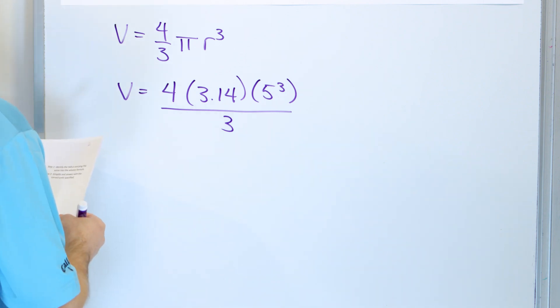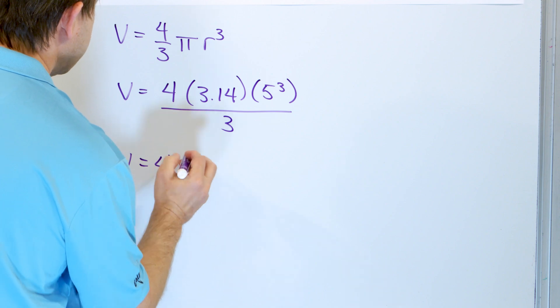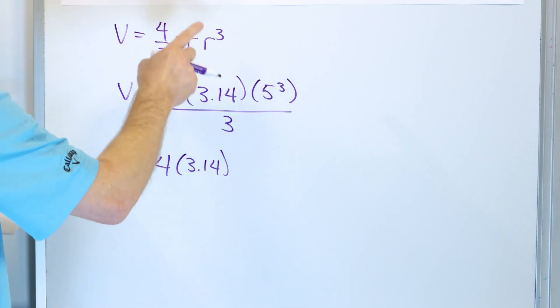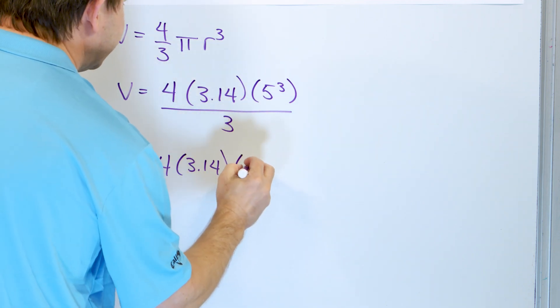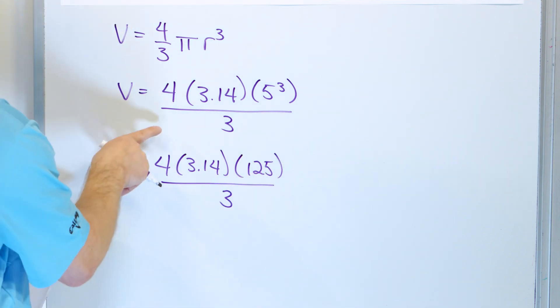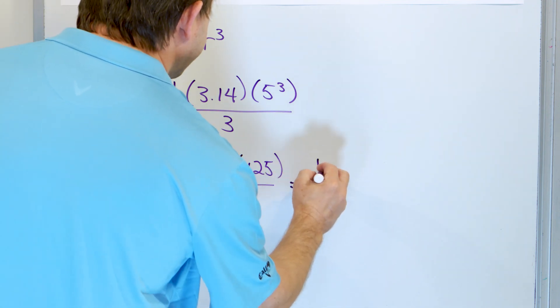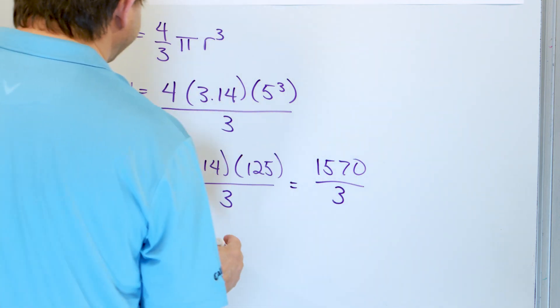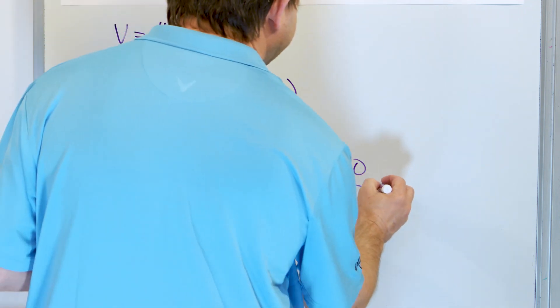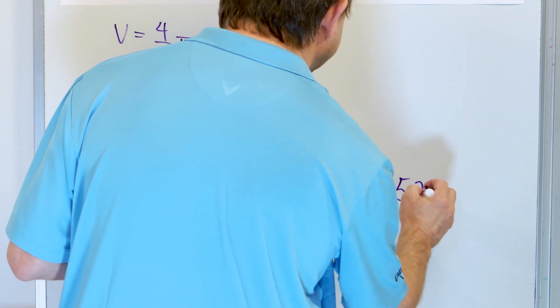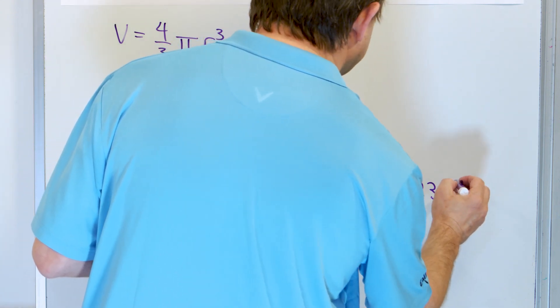Alright, so what we have here is, on the top, 4 times 3.14 times 5 cubed. 5 cubed is 5 times 5 times 5, and when you multiply that out you get 125, and then you divide that by 3. Now 4 times 3.14 times 125 works out to be 1570, and then we still have to divide this by 3. And so the volume that we get, when we take 1570 and divide that by 3, we get 523.3 with a repeating bar.